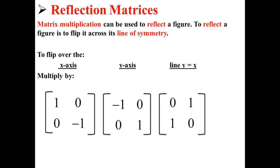Matrix multiplication can be used to reflect a figure. To reflect a figure is to flip it across its line of symmetry. Here we have three different matrices that we can multiply by depending on if we want to flip it over the x-axis or the y-axis, or the line y equals x.